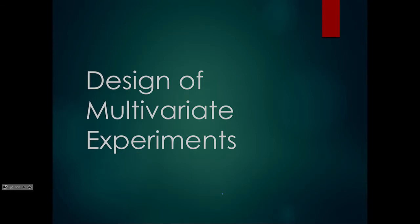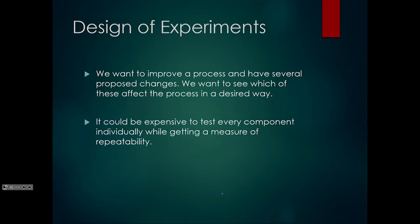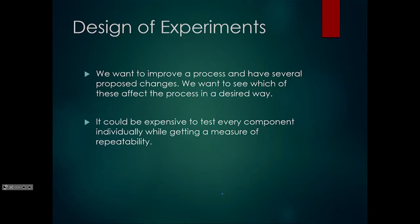When we're working with different processes, we might want to make some change and see how those changes affect the overall objective — the overall output. So we want to improve a process, and we have several proposed changes, and we want to see which of these affect the process in the desired way. The standard scientific method is to determine the relationship between an input, or independent variable, and an output, a dependent variable, by leaving everything else constant except for the thing you're interested in. However, if there are multiple proposed changes, you may not have the time or resources to test every single one of the possible proposed changes. The idea here is to discuss some way that can be both efficient and yet give you some indication of the information you're looking for.